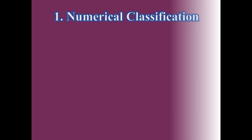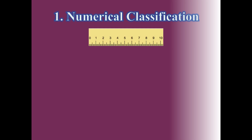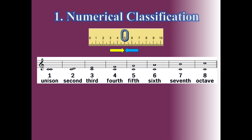Numerical Classification. In a ruler, the distance from 5cm to 5cm is 0. But in music, the distance from DO to DO is 1, not 0. We call that interval 'unison.'